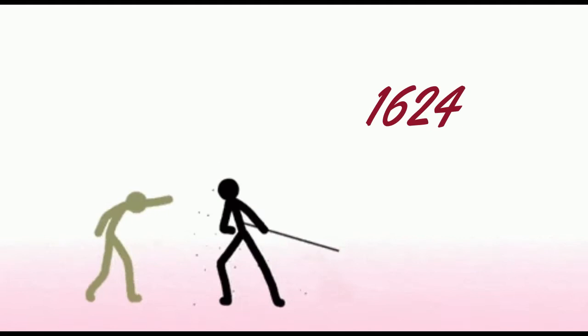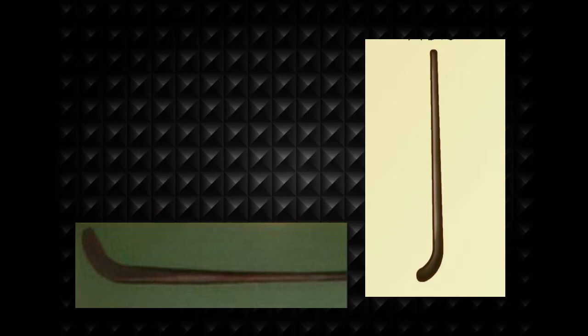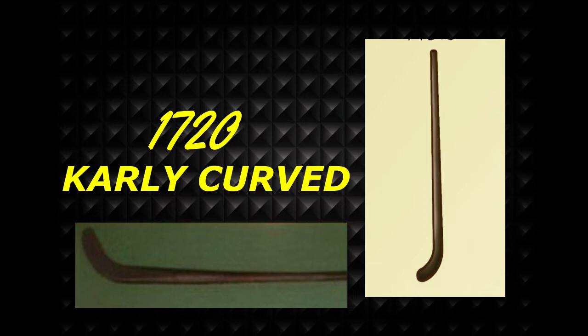In 1624, cricket was mentioned for the first time in print, as a batsman killed a fielder by hitting him hard on his head with the bat. This is how the earliest cricket bat was used. Around 1720, it looked more like a hockey stick — it's quite difficult to believe that it was used to play cricket, although some believe the game was first played using shepherd's crooks.